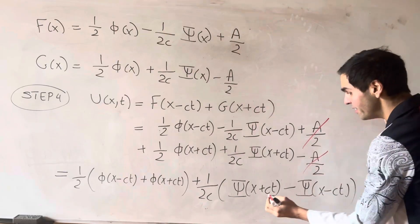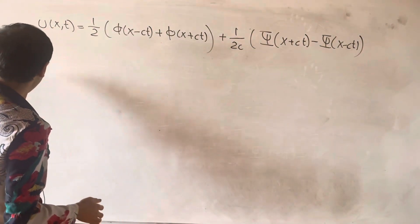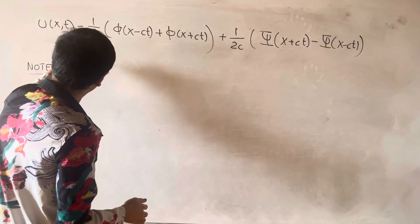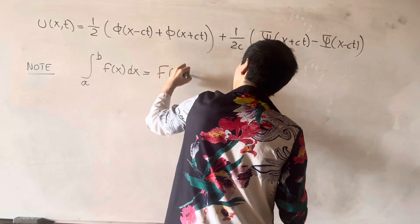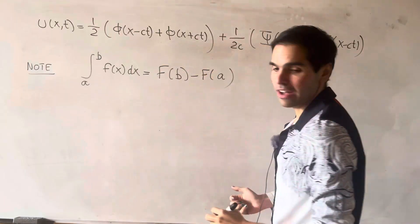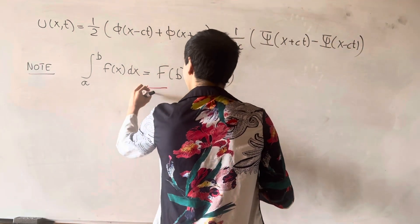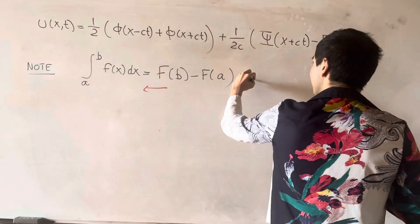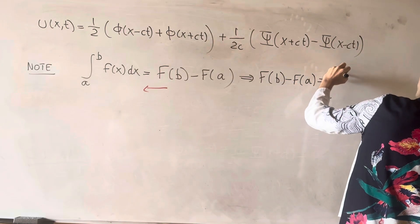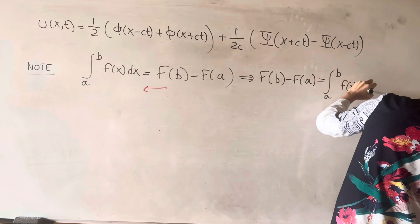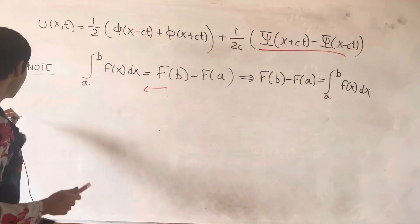But the cool thing is we can simplify this even further using the Fundamental Theorem of Calculus. Because what does the FTC say? It just says that the integral from a to b of f of x dx is the difference of antiderivatives. Capital F of b minus capital F of a. But the cool thing is you can also read this Persian style or Arabic style from right to left because this also says that the difference of antiderivatives is just an integral of the derivative. And notice this is precisely what we have here. We have a difference of antiderivatives so we can write this as an integral.